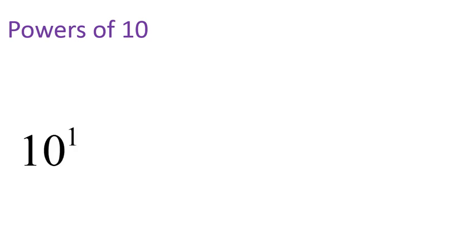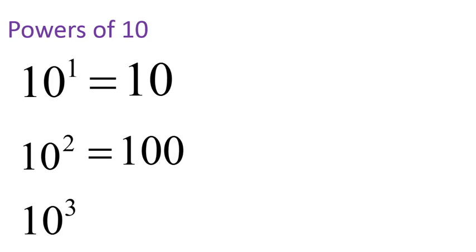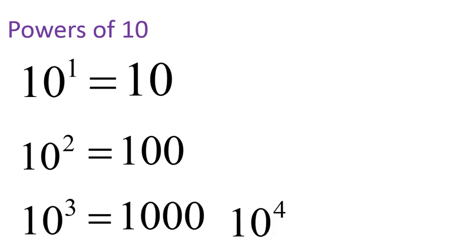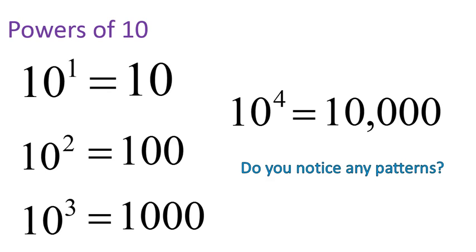Powers of 10 kind of look like this: 10 to the power of 1, 10 to the power of 2, 10 to the power of 3, 10 to the power of 4. Maybe you're noticing some patterns here. Hopefully you did notice some patterns, and I'm going to tell you about two patterns that I noticed. Number one, the exponent is the number of zeros. Okay, that's one pattern that I noticed.